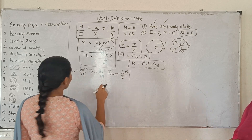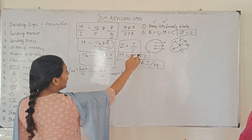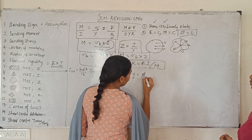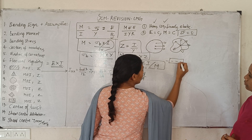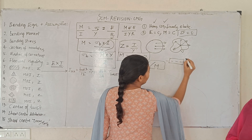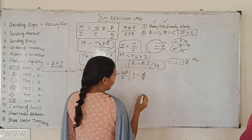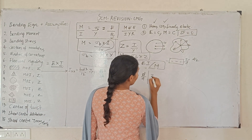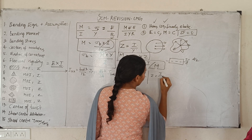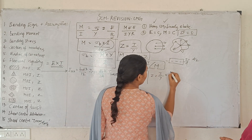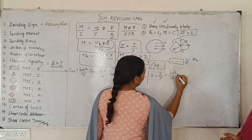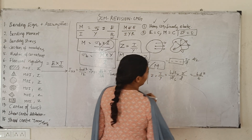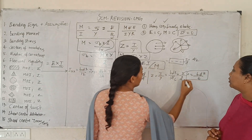Section modulus Z equals I divided by y. For a rectangle, y equals d by 2 (distance from neutral axis to extreme fiber). So section modulus Z equals b·d³/12 divided by d/2, which gives b·d² divided by 6.